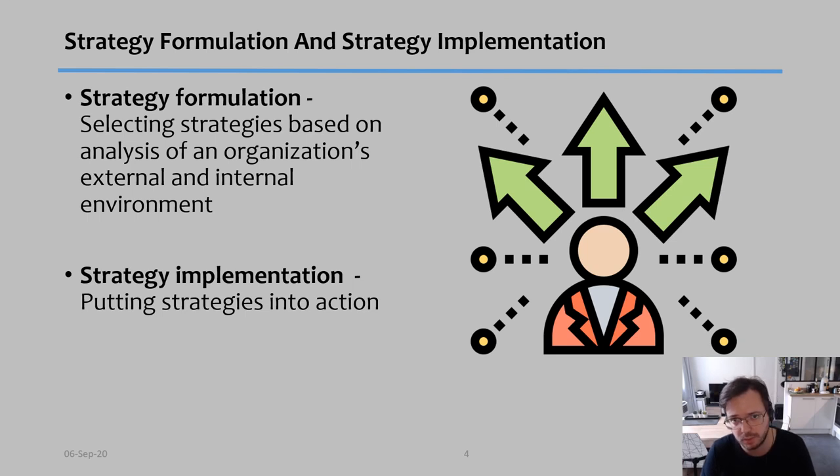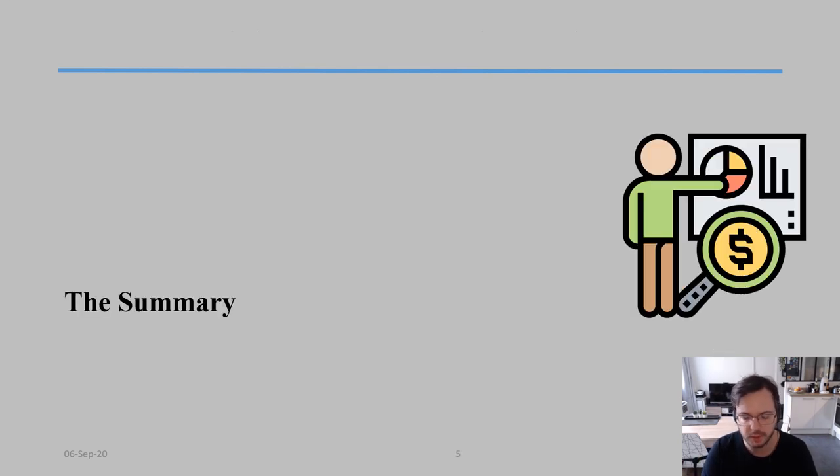As a quick summary, strategy is a set of related actions that we take in the company to achieve a specific goal. In order to do that, strategy normally goes through two steps: strategic formulation, where we come up with different plans, and strategic implementation, where we actually implement those actions into the real world.